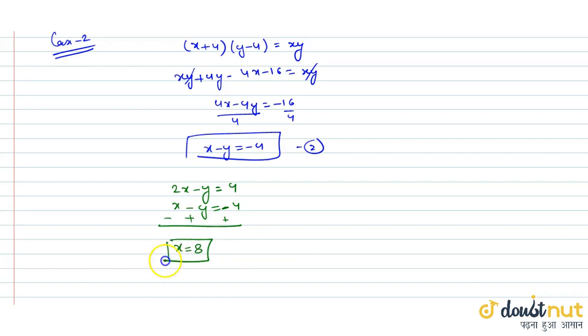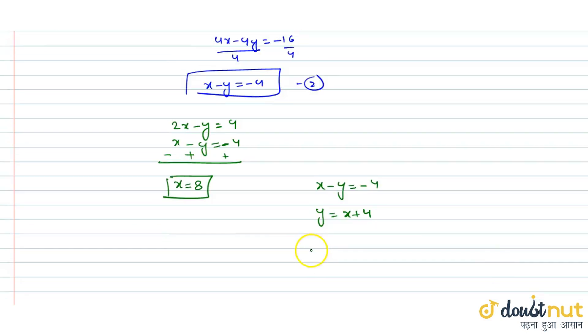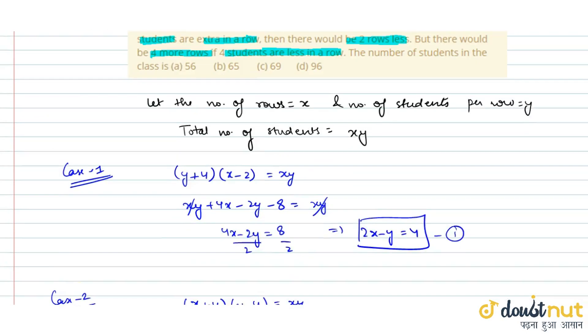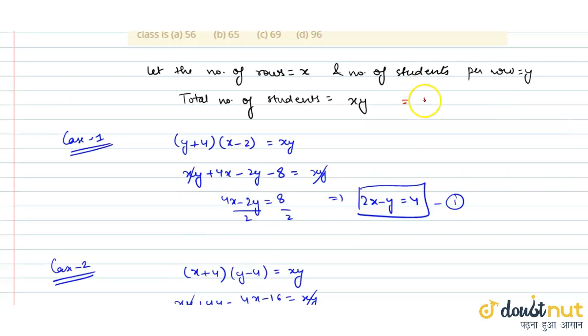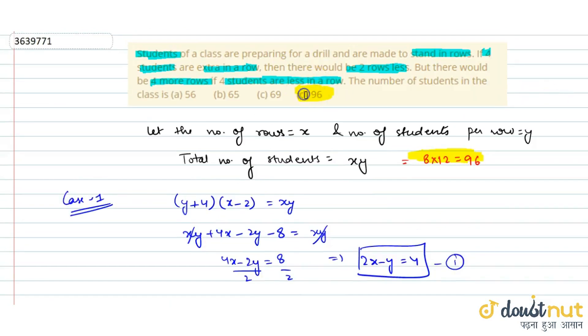From x minus y equals minus 4, we get y equals x plus 4. Substituting into equation 1: 2x minus (x plus 4) equals 4, so x equals 8. Then y equals 8 plus 4, that is 12. Total number of students is 8 into 12, that equals 96. So option D is the correct answer.